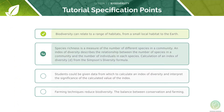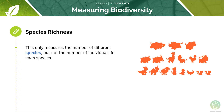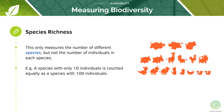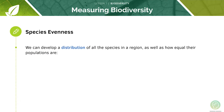Now we will cover species richness. Biodiversity can be quantified using species richness and evenness. Species richness is defined as the number of species within a particular region or habitat. Species richness only measures the number of different species but not the number of individuals in each species — therefore a species with only 10 individuals is counted equally as a species with 100 individuals. Species evenness will take into account the number of individuals in each species, allowing us to develop a distribution of all the species in a region as well as how equal their populations are.